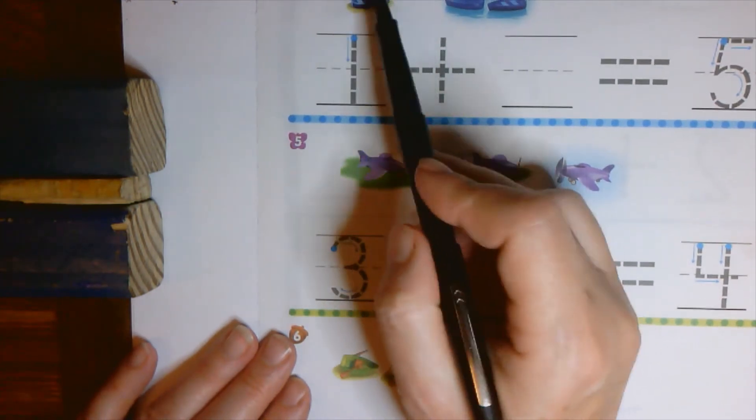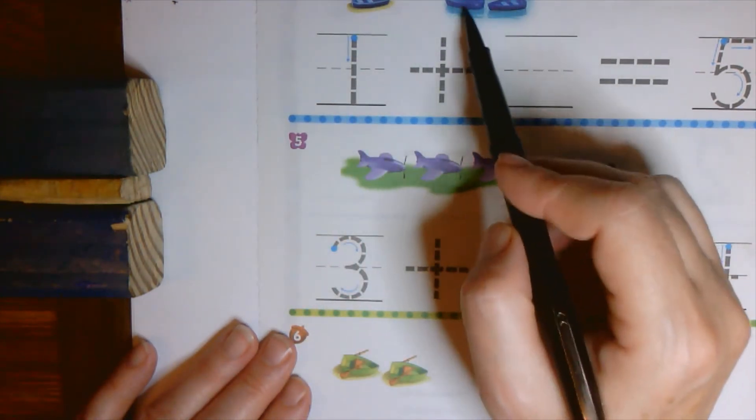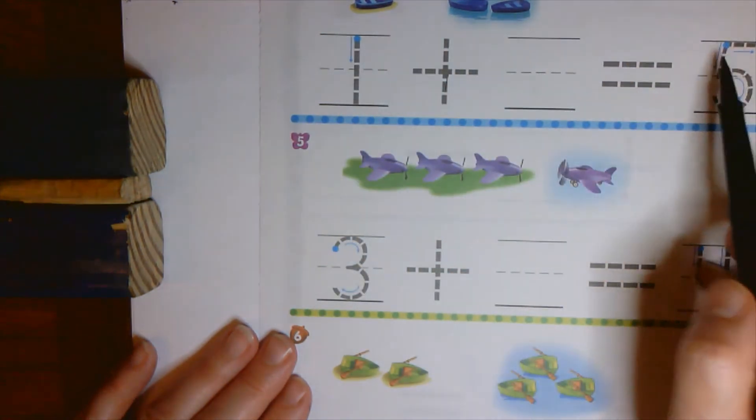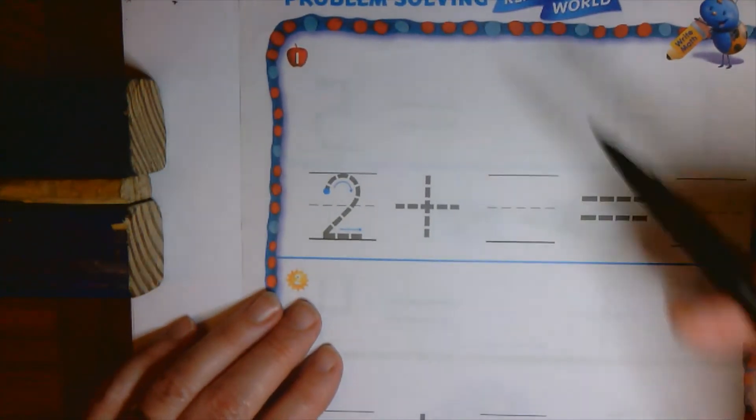Circle the beginning one, write down how many are getting added together, and then trace to finish the number sentence. And on all of these, last page,